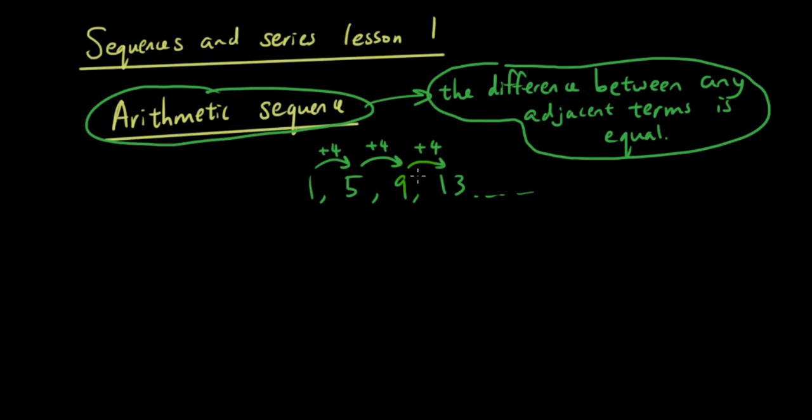So the difference between 9 and 13 is 4, the difference between 5 and 9 is 4, and the difference between 1 and 5 is 4.